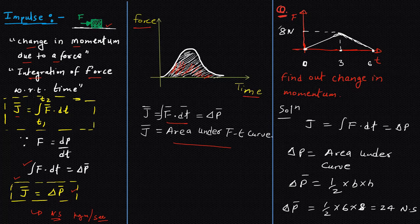Let's go to the question. In the question, it is given that there is a force-time graph and the force is increasing from 0 to 8 Newton uniformly in 3 seconds, and then from 3 to 6 seconds it is again decreasing from 8 to 0, and we need to find out change in momentum.